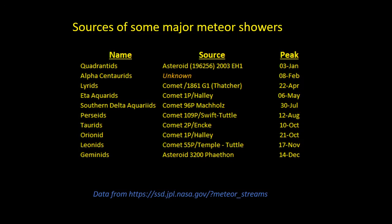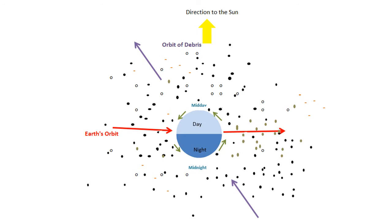Here are the sources of some of the other major meteor showers. As a general rule, the best time of day to observe any meteor shower is just before dawn. The diagram shows the Earth passing through a debris cloud — in the hours after midnight, the observer is on the side of the Earth facing towards its direction of travel, so more meteoroids are scooped up and enter the atmosphere.